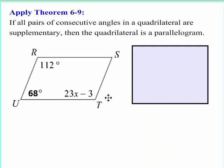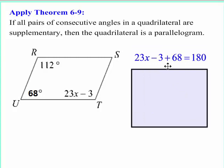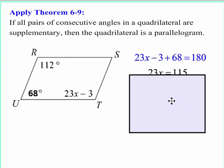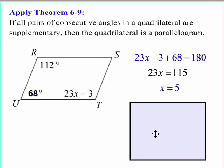If all pairs of consecutive angles in a quadrilateral are supplementary, then the quadrilateral is a parallelogram. These two angles clearly add up to 180. The question is: what does x have to be for these two to add up to 180? So 23x − 3 + 68 = 180 degrees. Combining like terms and subtracting 65 from both sides, you get 23x = 115, divided by 23, so x has to be 5 for this to work.